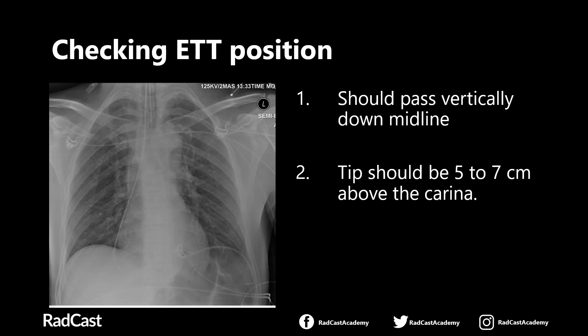Another tube seen in our case is an endotracheal tube, and this time it's in the correct position. As the name suggests, endotracheal tubes are meant to lie within the trachea and are used when a patient is being ventilated. Their position is easier to assess than the nasogastric tube — they simply have to pass down the midline in the trachea, and the tip needs to be located a good distance away from the carina where the trachea bifurcates. Ideally it should be five to seven centimetres away from the carina.